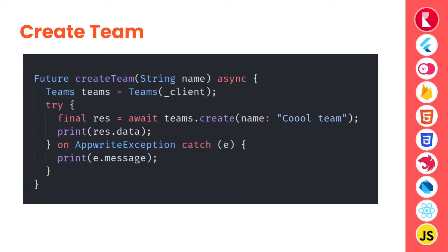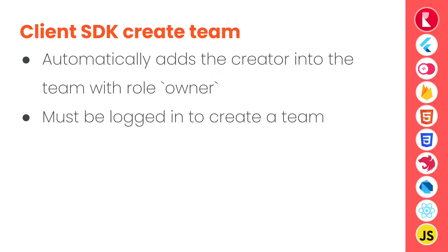Let's look at how we can create a team. Here is an example from Dart or Flutter code where we initialize the teams service first by passing our client, and then we call teams.create and pass the name. Name is the only required parameter. When creating a team from the client SDK, the currently logged-in user is automatically added to the team with the role of owner, so the user must be logged in.